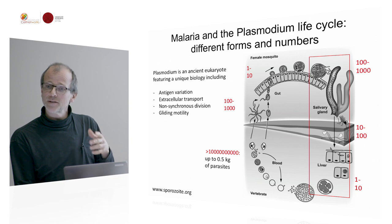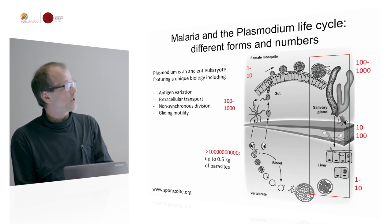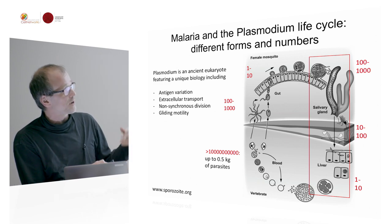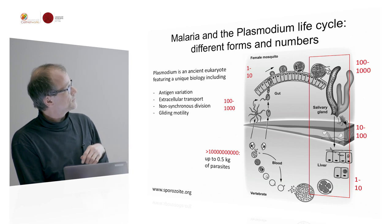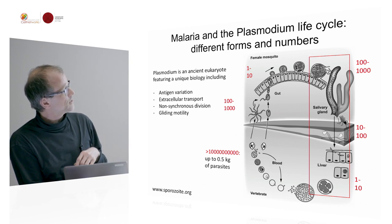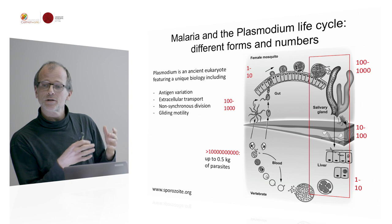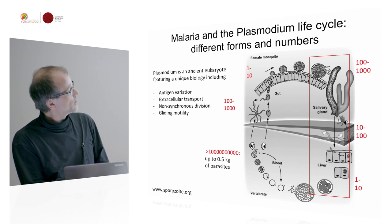It outruns the neutrophils to seek and enter into blood vessels, and then it's dragged with the blood flow throughout our body. But it specifically arrests in the liver, where it infects the liver cell, and then it differentiates and lots of parasites come out again — they jump into red blood cells.